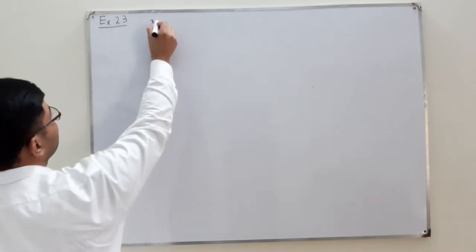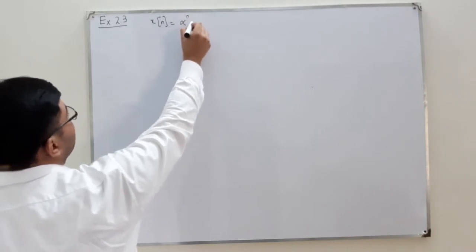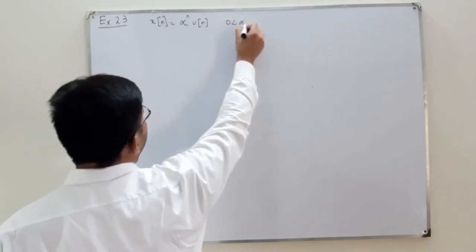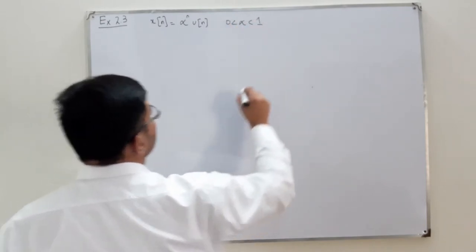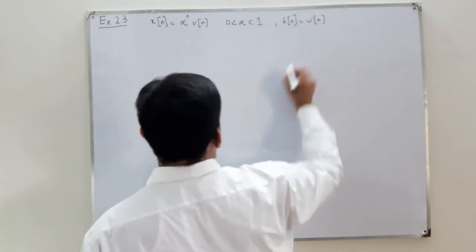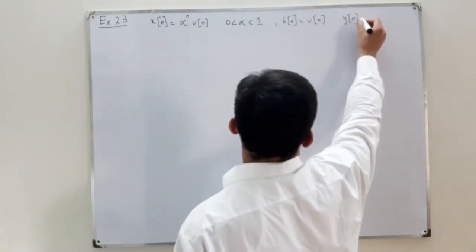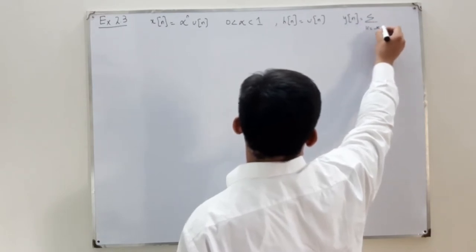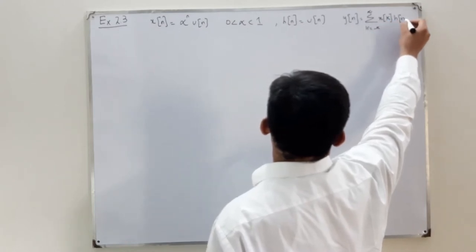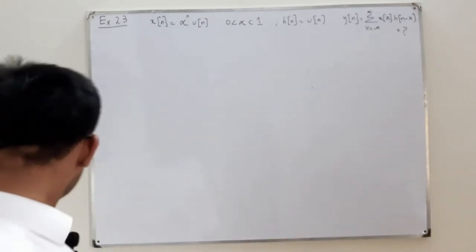So x(n) is given to be alpha to the power n times u(n), where alpha is between 0 and 1. And h(n), the impulse response of the system, is the unit step signal u(n). We are asked to find y(n), which is the summation k running from negative infinity to positive infinity of x(k) h(n minus k). This is unknown.